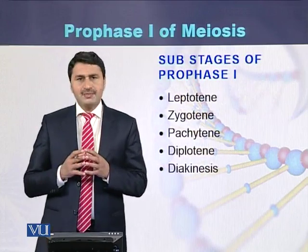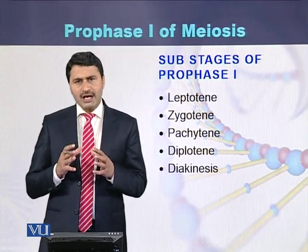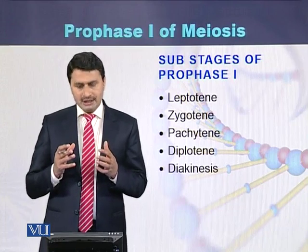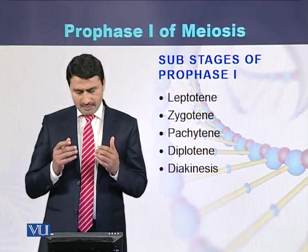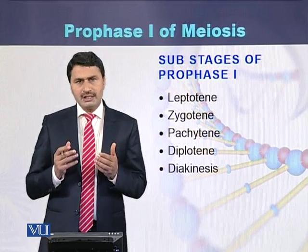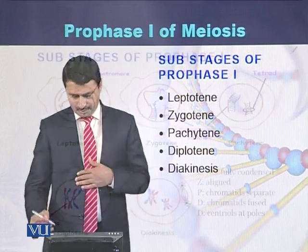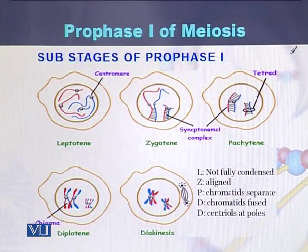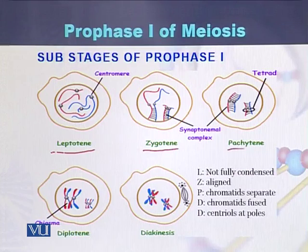The five sub-stages of Prophase I are: Leptotene, Zygotene, Pachytene, Diplotene, and Diakinesis. These are the five sub-stages we will examine in detail.